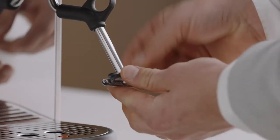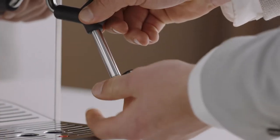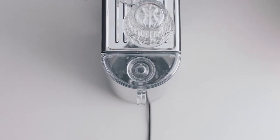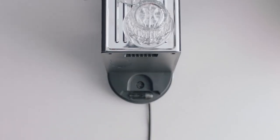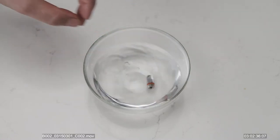If the steam wand remains blocked, remove the tip using the steam tip cleaning tool, which is located in the back of the machine under the water tank, and soak the tip in hot water.